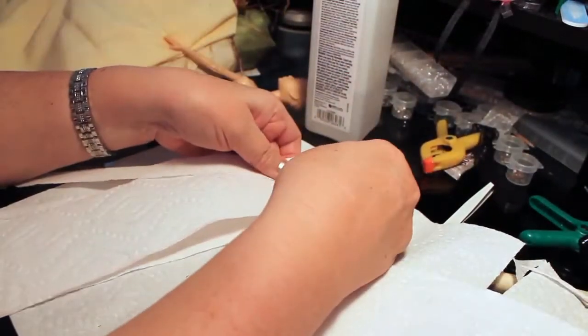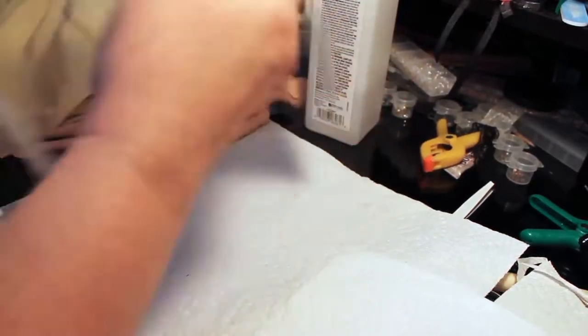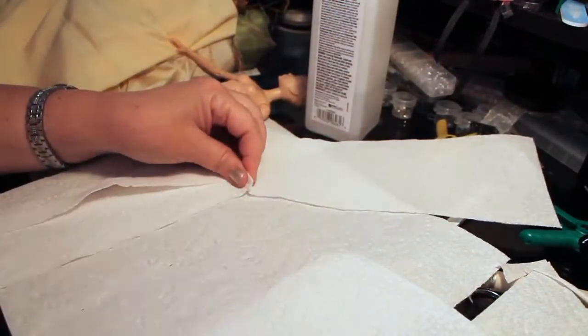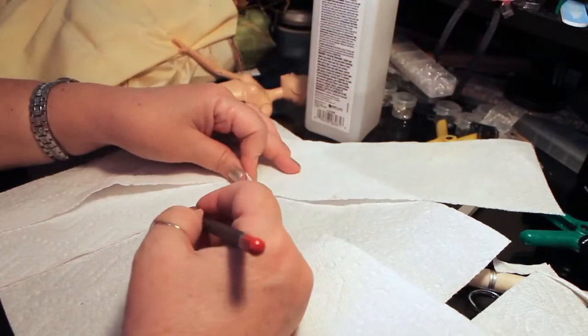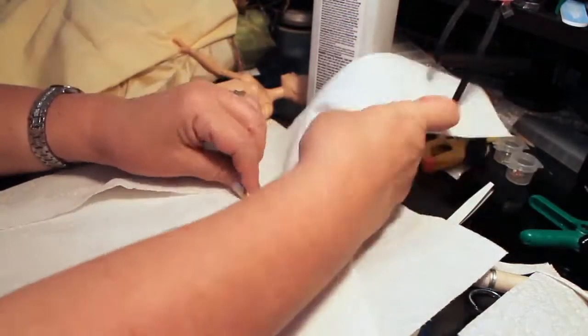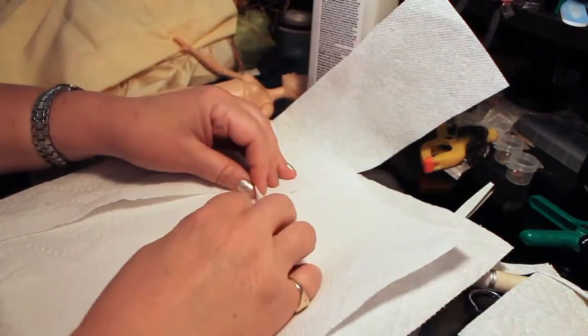This is going to be the collar. I'm just eyeballing it to see how much material I'm going to need to go around from hip to hip, that curve on the front of the kimono.